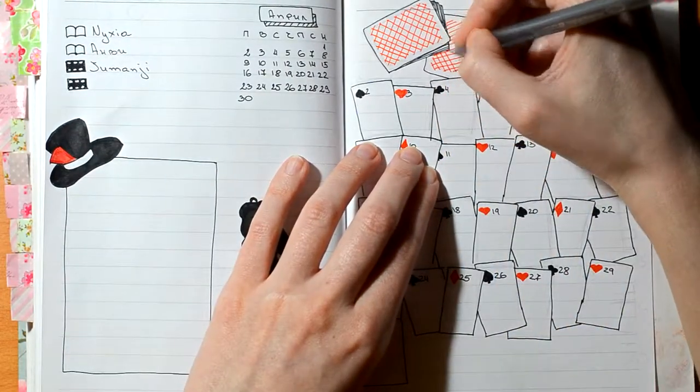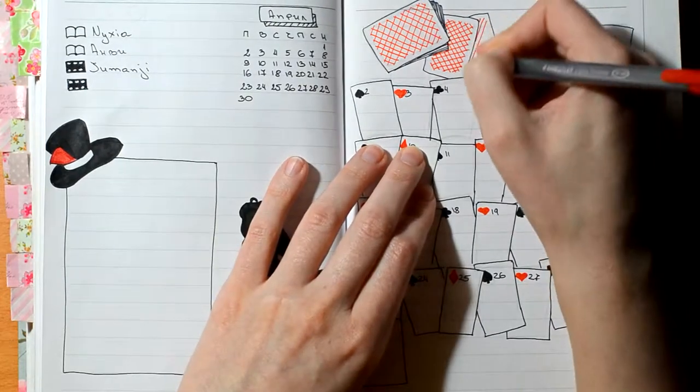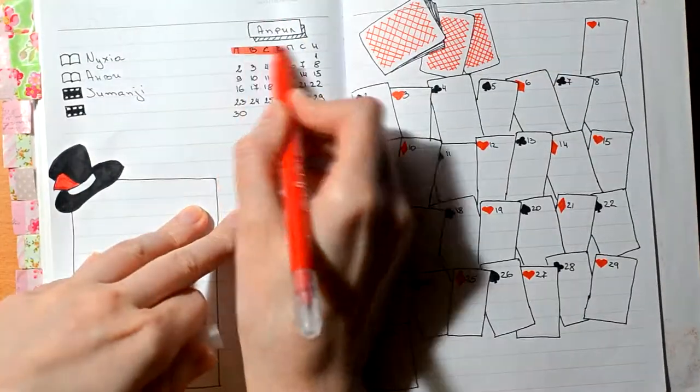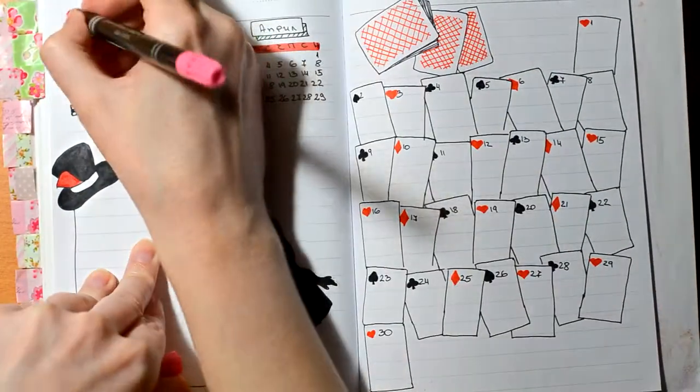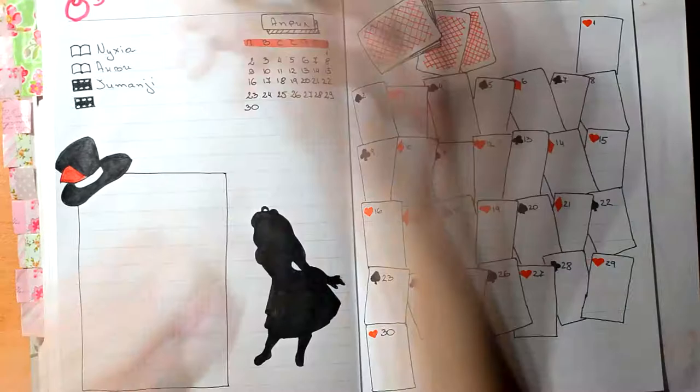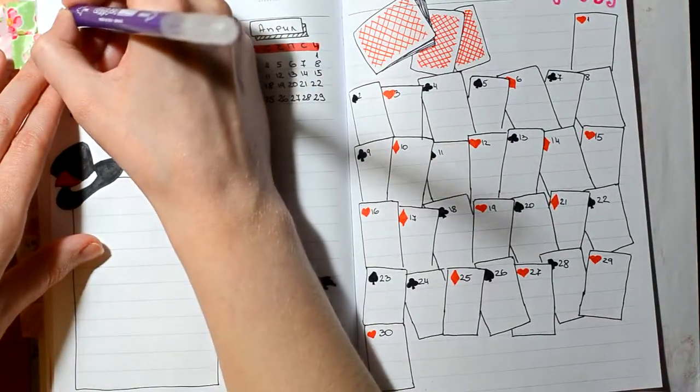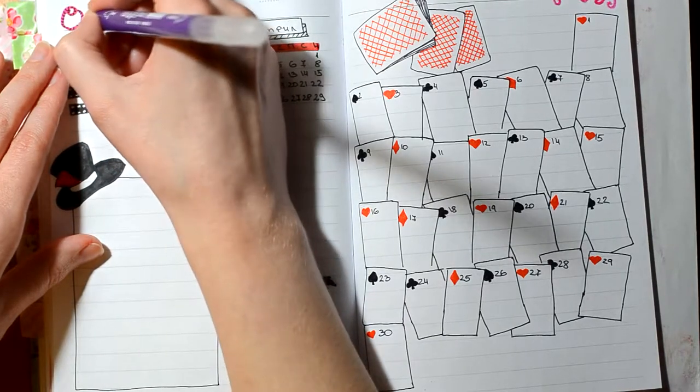On the other page I do my social media trackers. In terms of my habit trackers, I usually keep it very simple. I use just paper that already has squares on it, and I just write down all of my habits and I just color in the squares. But this month I decided to do something differently.